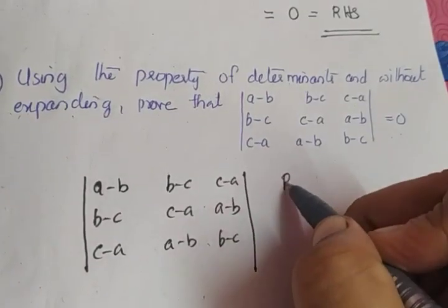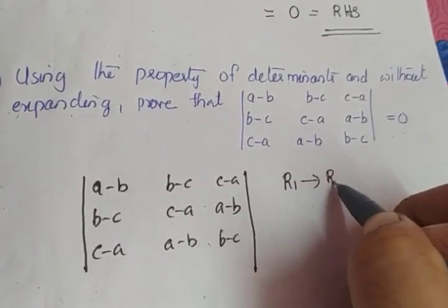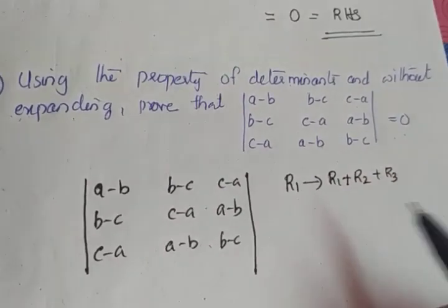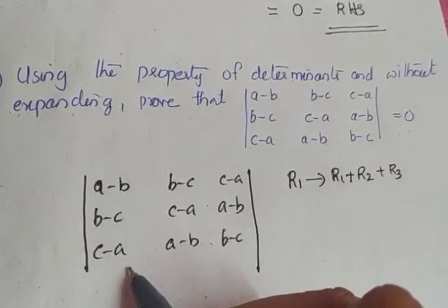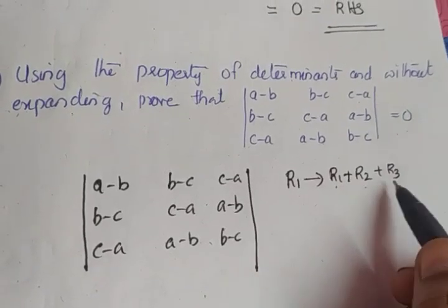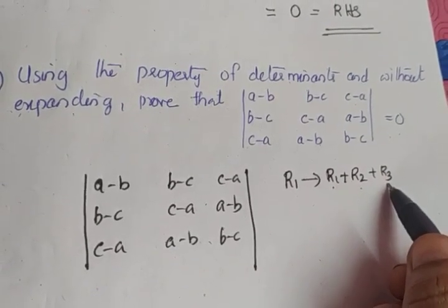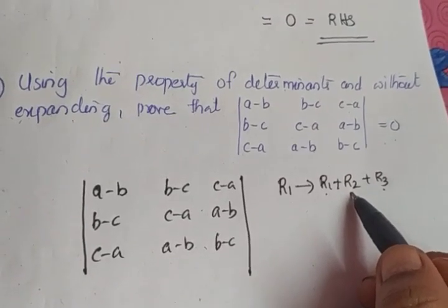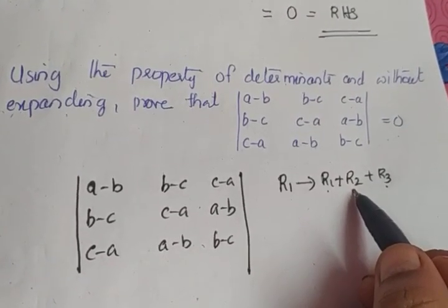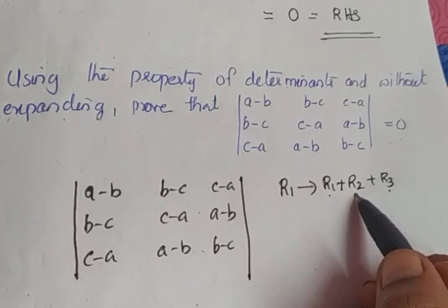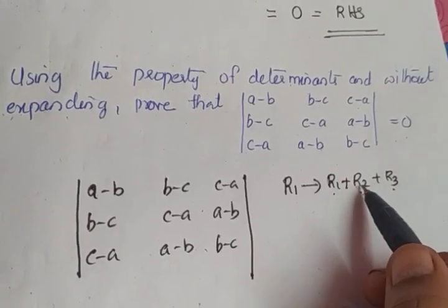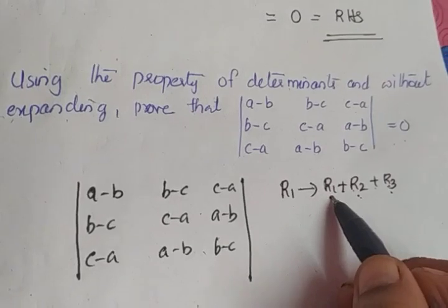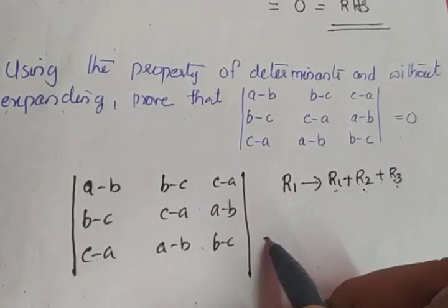What I am going to do is change R1 to R1 plus R2 plus R3. The sixth property says that if you add a multiple of a row or column to another row or column, the determinant value remains the same. Here I am adding 1 times R2 plus 1 times R3 to R1, so the determinant value remains the same.